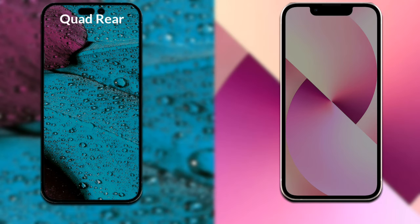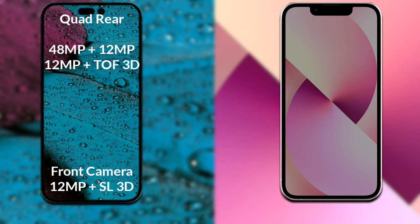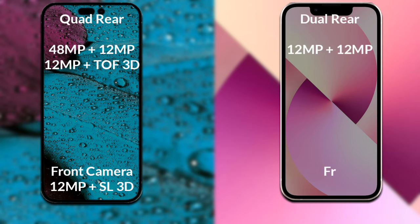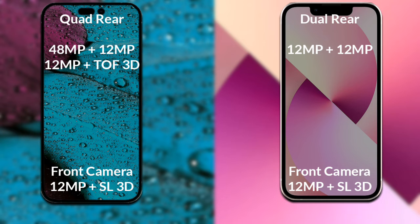Comparing the cameras: the iPhone 14 Pro Max has a rear quad camera setup. The primary camera is 48 megapixels, the secondary sensor is 12 megapixels, the third sensor is 12 megapixels, and the fourth is a 3D scanner. Its front camera is 12 megapixels with an SL 3D scanner. The iPhone 13 Mini has a rear dual camera — primary 12 megapixels, secondary 12 megapixels — and a 12 megapixel front camera with SL 3D scanner.